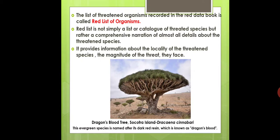Why is it called the Dragon's Blood Tree? Because its body produces a dark red colored resin. When we cut the stem, you can see it appearing like blood losing from the body of an animal. We can see that red resin.